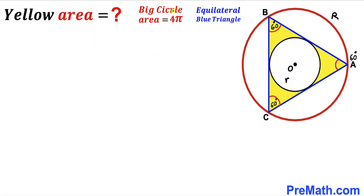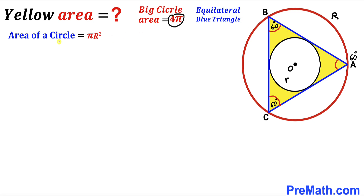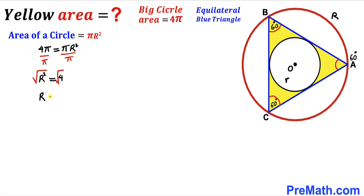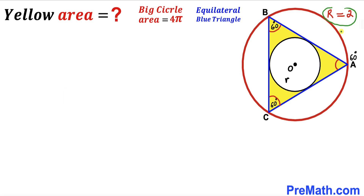We know the area of the bigger circle is 4π. Using the area of a circle formula, area = πR², we set 4π = πR². Dividing both sides by π gives R² = 4, and taking the square root of both sides gives uppercase R = 2 units. So the radius of the larger circle is 2 units.